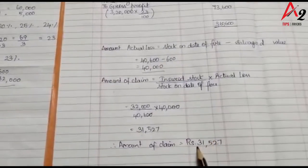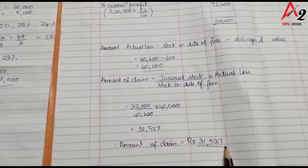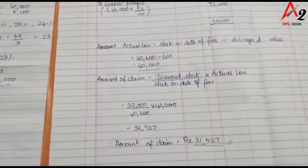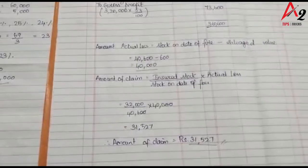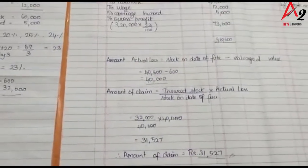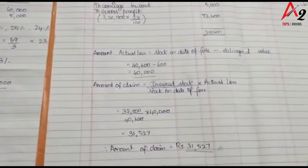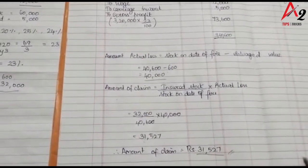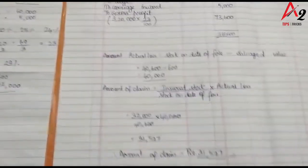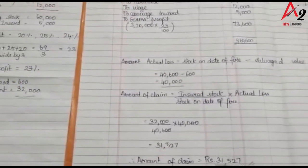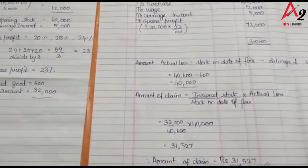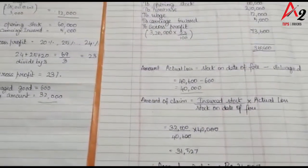Calculating: $32,000 by $40,600 into $40,000 equals $31,527. So the amount of claim is equal to $31,527. Thank you for watching the video. Subscribe for more videos. If you want an explanation of the video, comment in the next video.